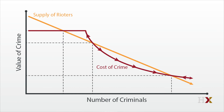The medium crime point is unstable. If you have a few more rioters, the benefit of rioting exceeds the cost of rioting, and so the size of the riot snowballs. If you have a few fewer rioters, the benefits of rioting are less than the cost of rioting, and so the size of the riot shrinks. There are two stable equilibria: one with a big riot, the other with normal levels of crime.